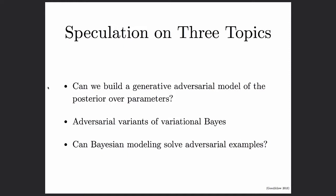I will speculate about three different topics where hopefully members of the audience have the right skills to execute on some ideas that could be very helpful both for adversarial machine learning and for Bayesian machine learning. The three basic ideas will be: first, if we can build a generator network that can sample from the Bayesian posterior over parameters; second, if there are better adversarial ways of replacing the traditional approach to variational Bayes; and finally, if Bayesian methods are able to solve the problem of adversarial examples in supervised learning.